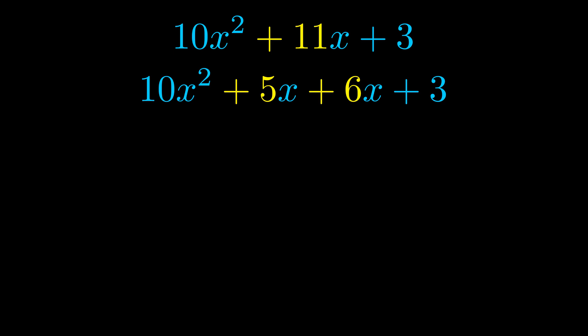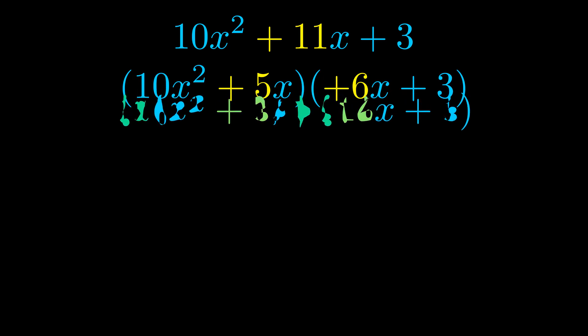Once we've done this we go ahead and we put parentheses around the first term and the last term. And we do that so that we can take the greatest common factor out of both terms. We can see the greatest common factor is now outside in green. Notice also how what remains inside of the parentheses is the same in both cases. The blue values are the same.